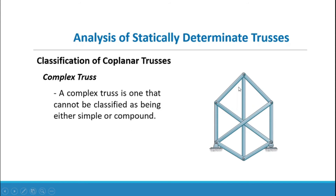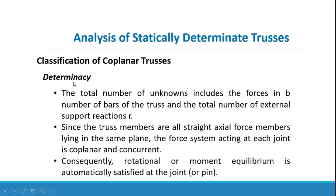A complex truss is one that cannot be classified as either simple or compound. To find the determinacy of a truss, the total number of unknowns includes the forces in B members (number of bars) plus the total number of external support reactions R. Since truss members are all straight axial force members lying in the same plane, the force system acting at each joint is coplanar and concurrent, so rotational equilibrium is automatically satisfied at each pin.